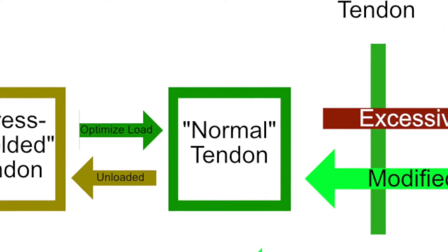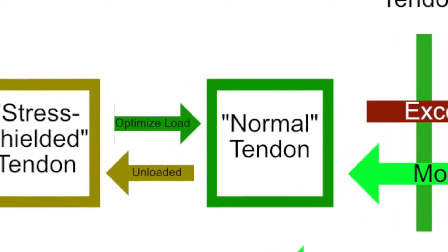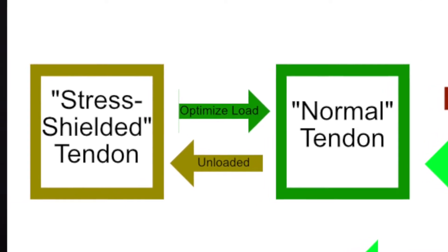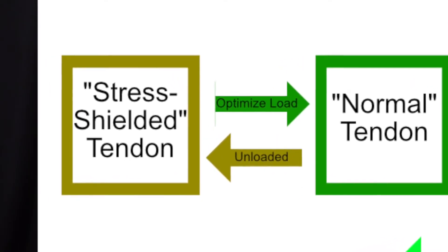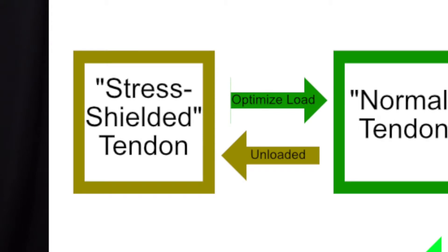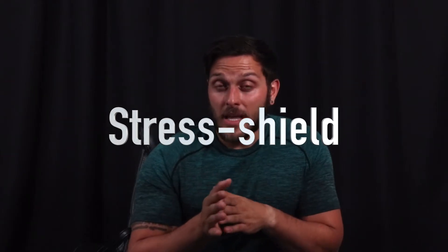When somebody is in a relatively unloaded state or they're sedentary, the tendon actually thins out. And when it thins out, it becomes into a state known as stress shielded. When it's stress shielded, only the superficial part of that tendon continues to really work like it's supposed to, where the deeper components don't really contribute much.